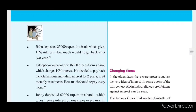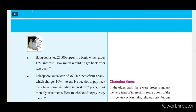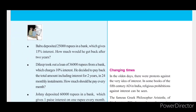Hello friends, welcome to the class. We are going to talk about the Kite Victims Max's activities. That is the activities where Babu deposited 25,000 rupees in a bank which gives 15% interest.